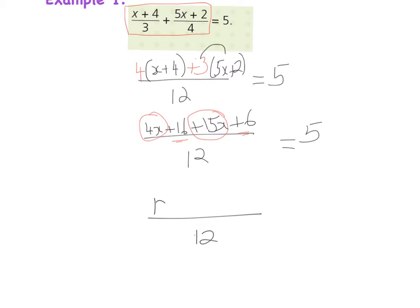So I have 19x, and then plus 16 and plus 6 gives me plus 22, and that all equals 5.